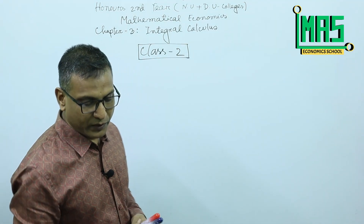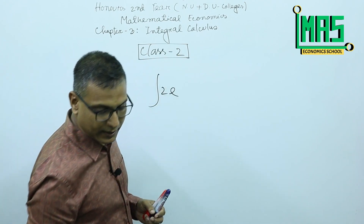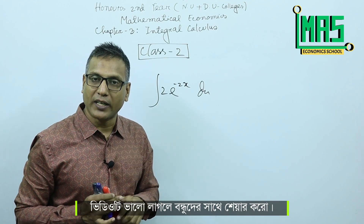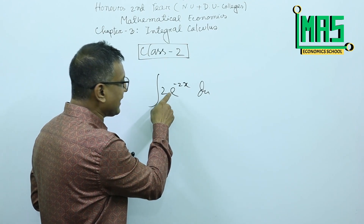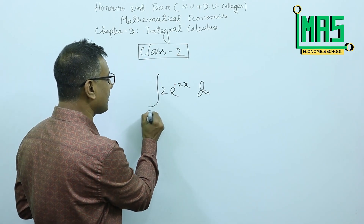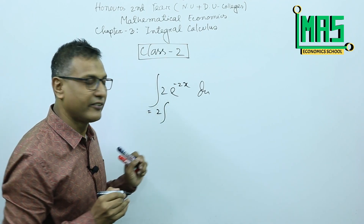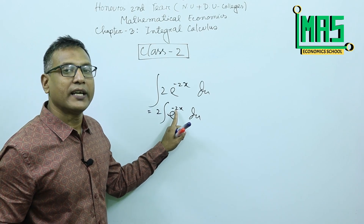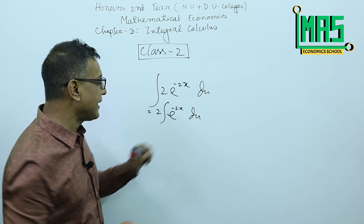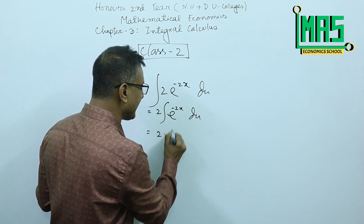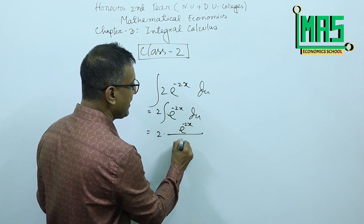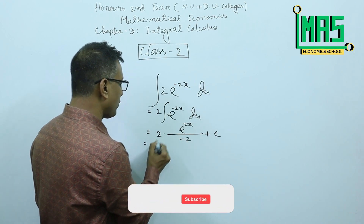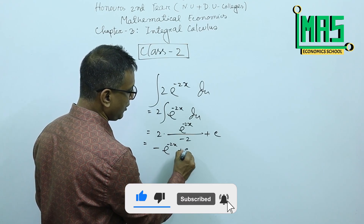This is a question from the National University exam of 2000: integration of 2e to the power minus 2x dx. Here e to the power minus 2x dx, where k is minus 2. Applying the formula: e to the power minus 2x divided by minus 2, plus c.